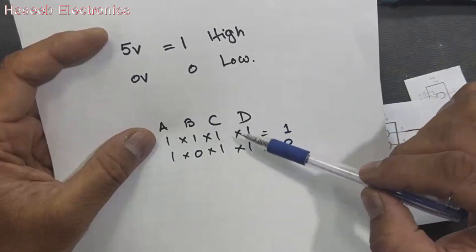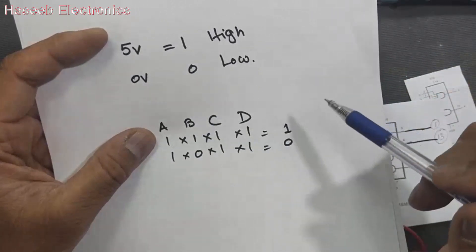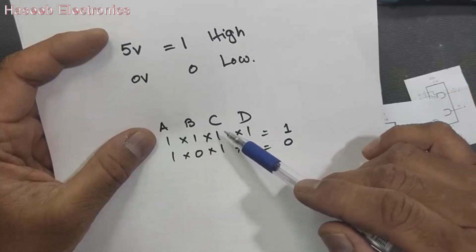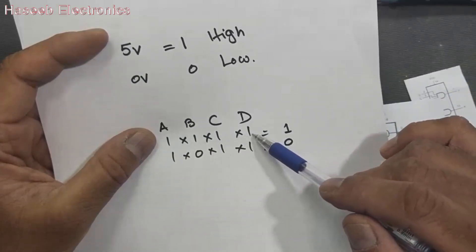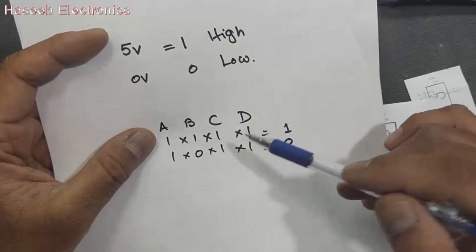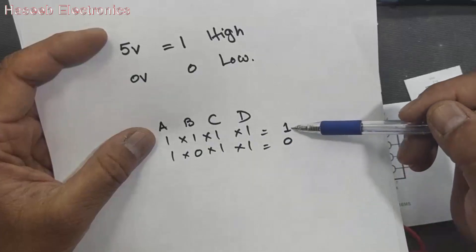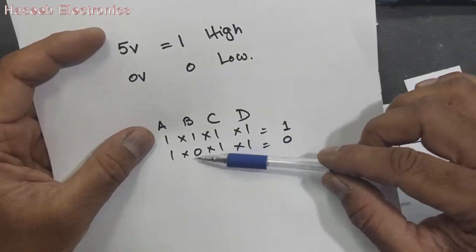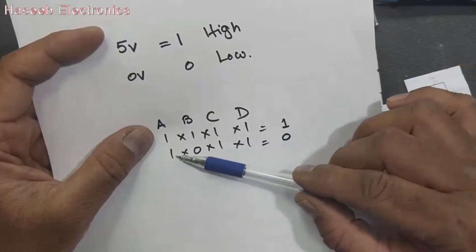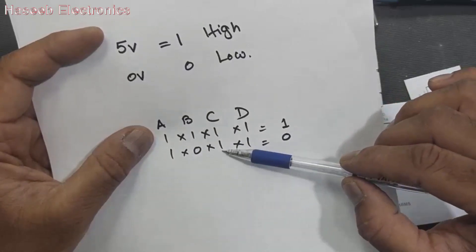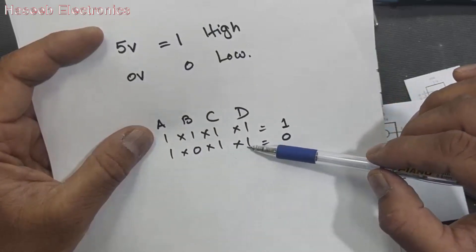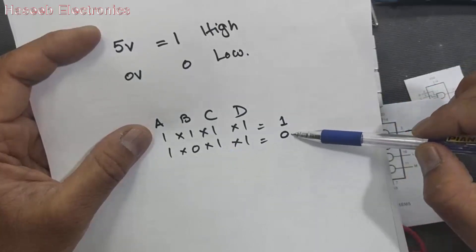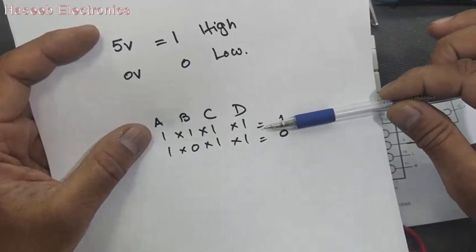The AND gate makes an AND function — a dot function, a multiply function. 1 multiplied by 1, multiplied by 1, multiplied by 1. If all inputs are high, the output will be high. If any input goes low — 1 multiplied by 0, multiplied by 1, multiplied by 1 — here is 0, so the output will be 0. It is a logical operation.